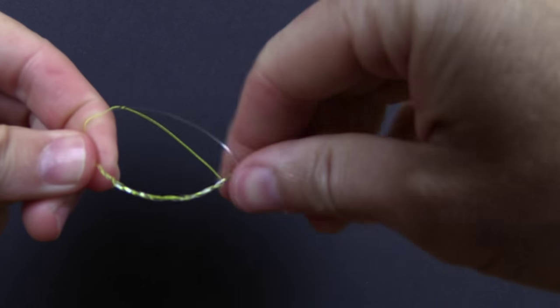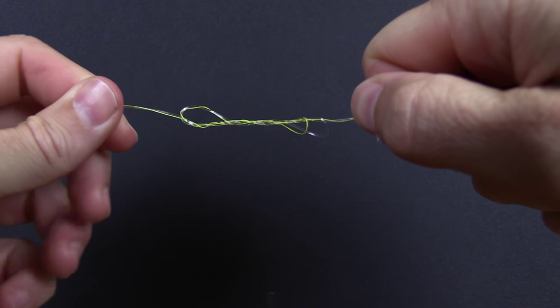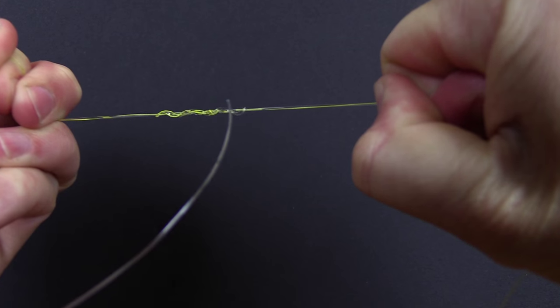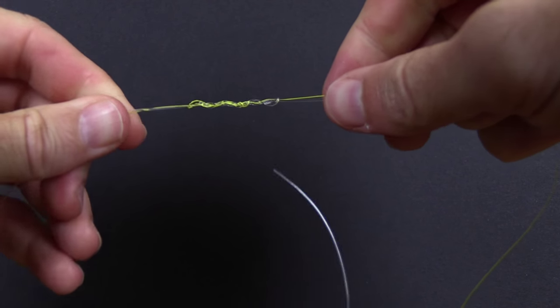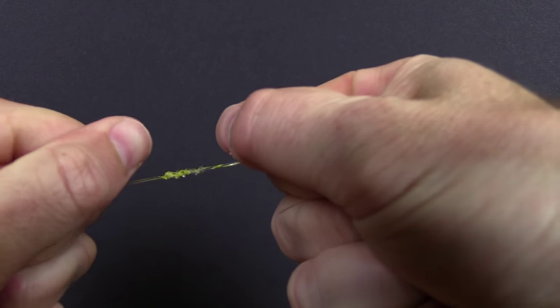Now we need to start pulling them tight together. Try to grab all four strands and pull evenly. I'm going to get some saliva on it so that the lines don't damage themselves. Now it's time to really put tension on it. We're going to grab all four strands and pull it tight.